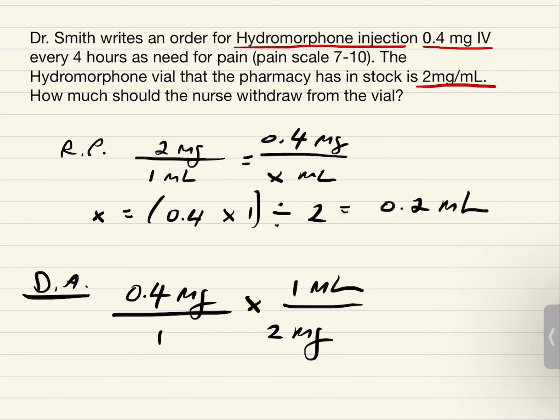The milligrams are going to cancel each other out. So you're going to be left with milliliters. You're going to do 0.4 times 1 divided by 2 is equal to 0.2 milliliters. The nurse will withdraw 0.2 milliliters.